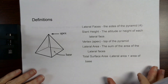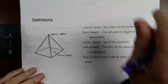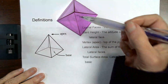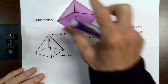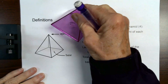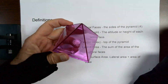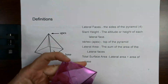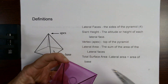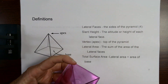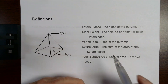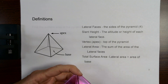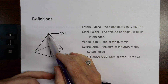We want to start first with definitions. If I have a pyramid — a pyramid comes to a point — the very top point of the pyramid, which is directly opposite the base, is what we call the vertex or the apex.